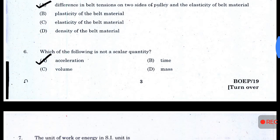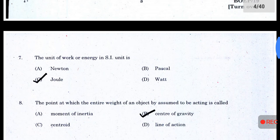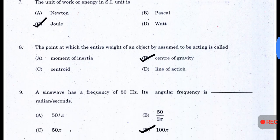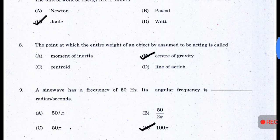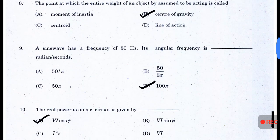Which of the following is not a scalar quantity? Answer A — acceleration. The unit of energy in SI units is joule. The point at which the entire weight of an object is assumed to be acting is called — answer B — center of gravity. The sine wave has a frequency of 50 Hz; its angular frequency is 100π radian per second.